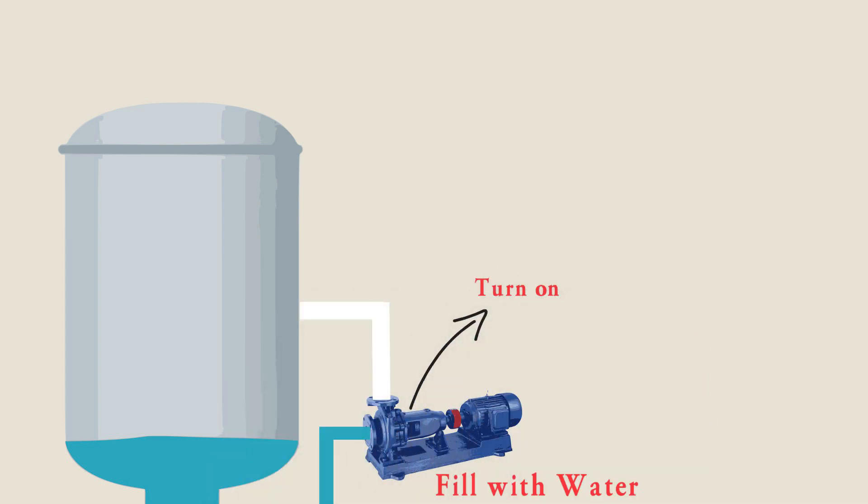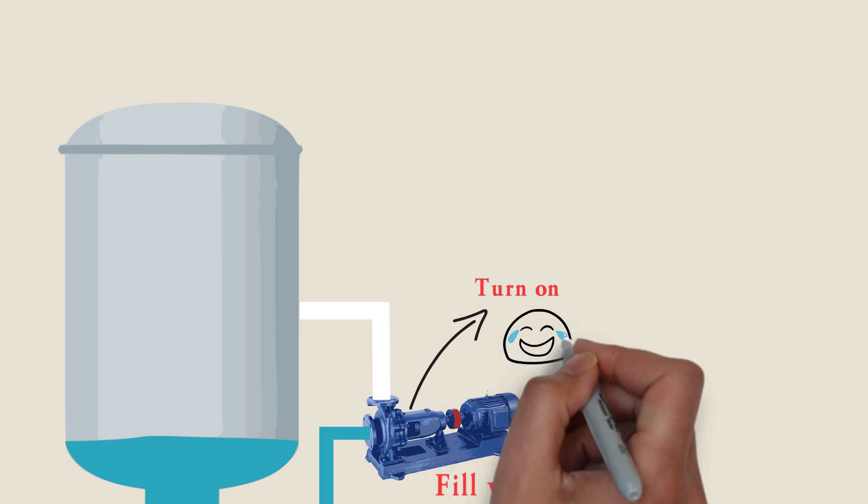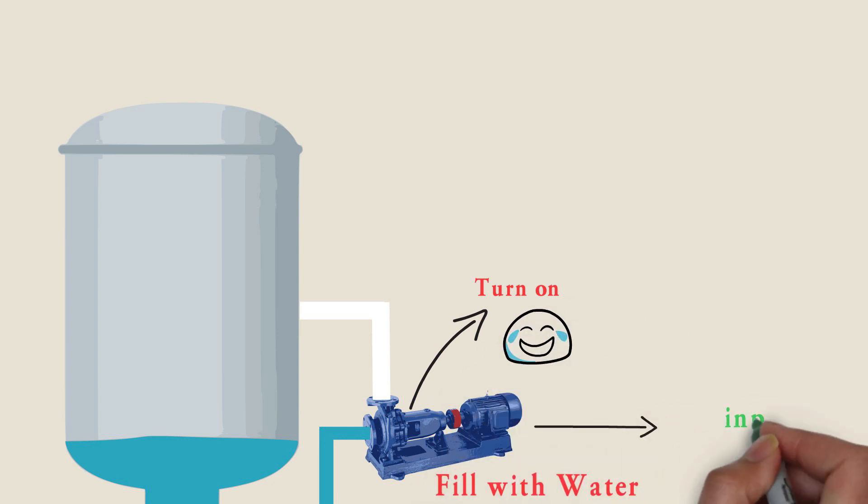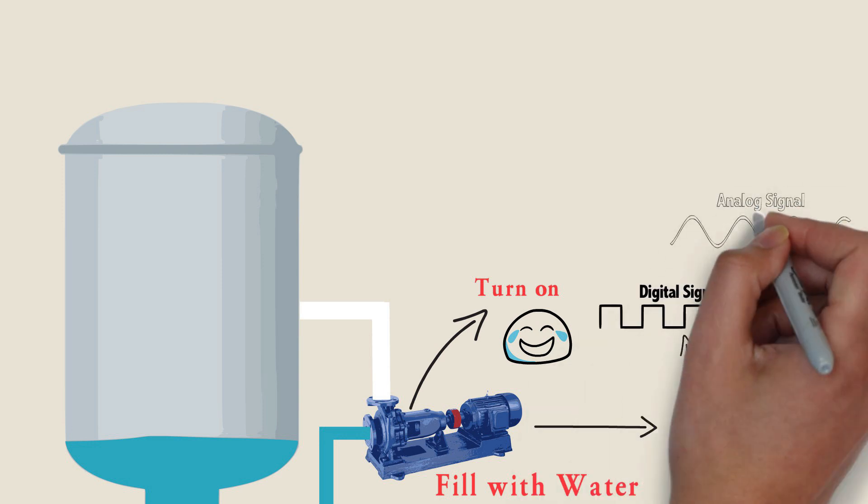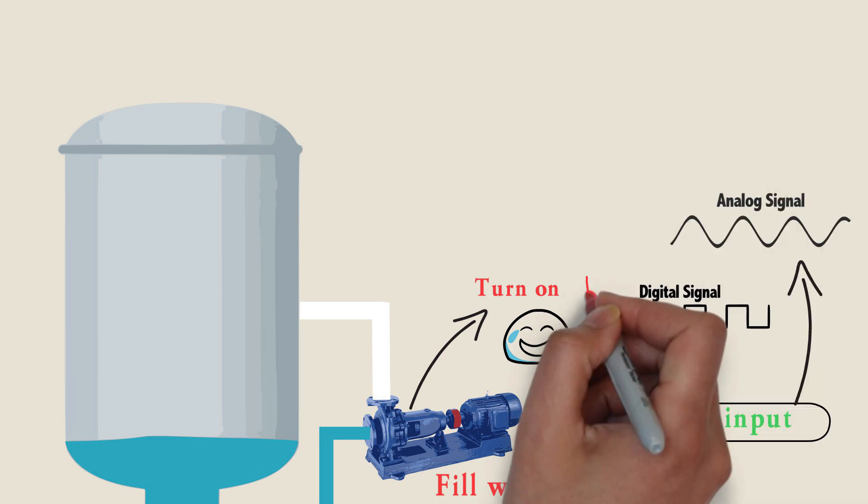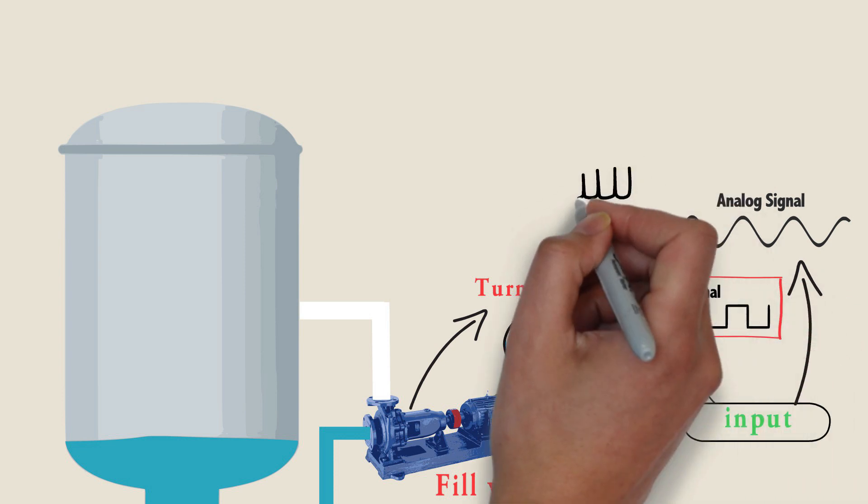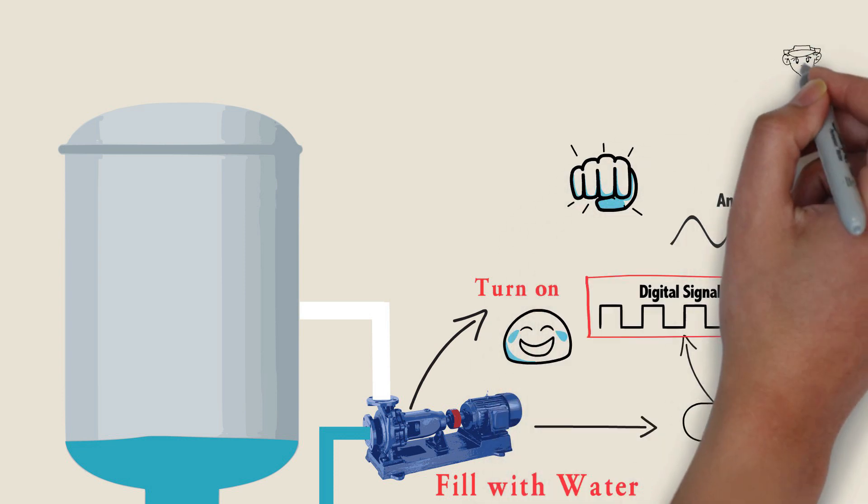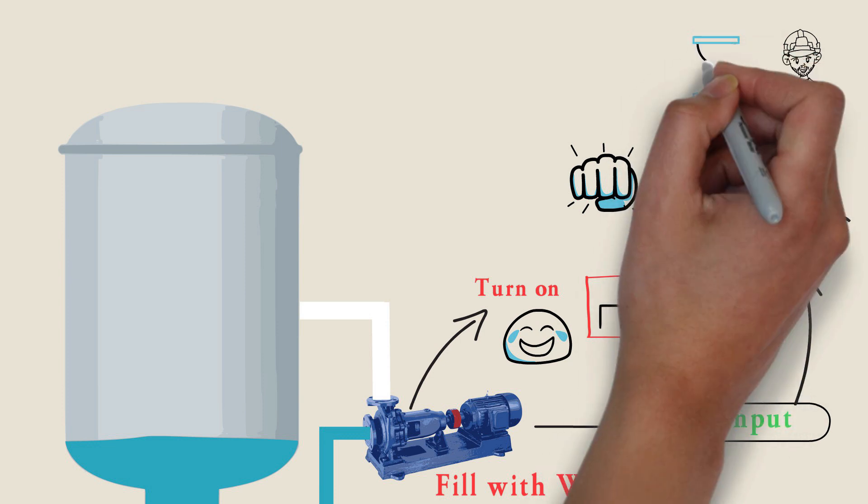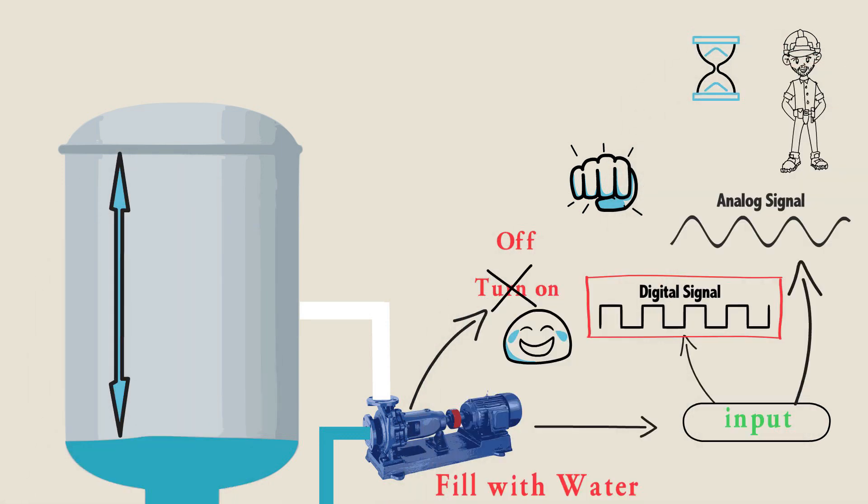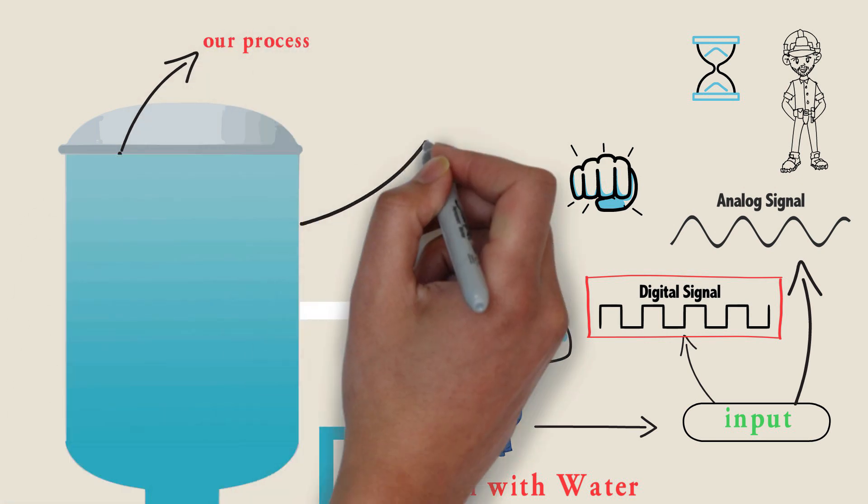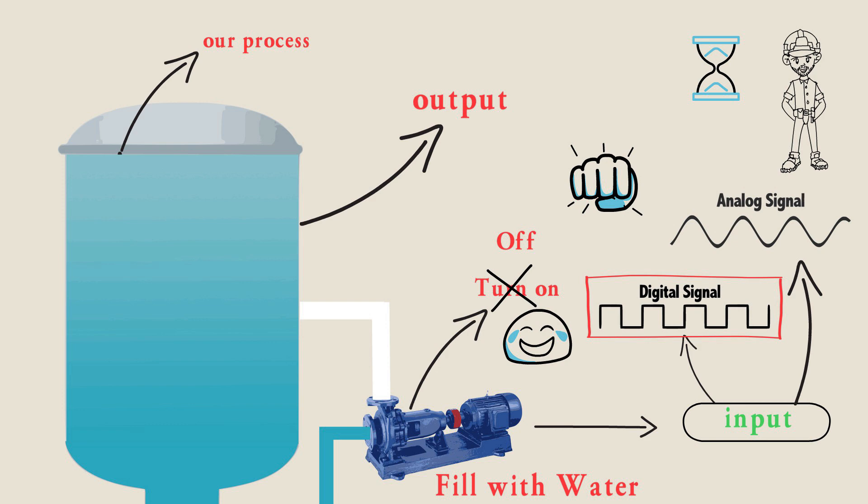Turning on the pump is our input here, and input can be either digital signal or analog signal. But now our input will be digital as we will turn the pump on manually, and the worker will wait until the tank is full to turn the water pump off. Checking the water level here is our process, and our output is to keep the tank with a certain level of water in it.